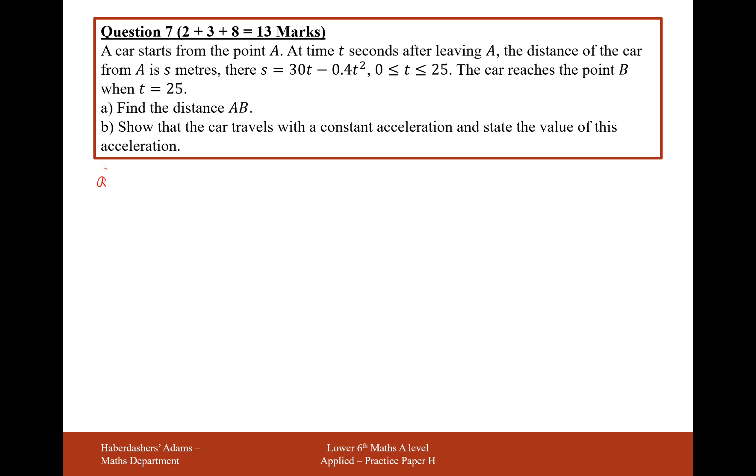Given that the car reaches the point B when t is 25, all we've got to do here is just plug the value 25 into the formula for s. Plugging that in, we're going to get s equals 500 metres. That's easy enough to get us started with.